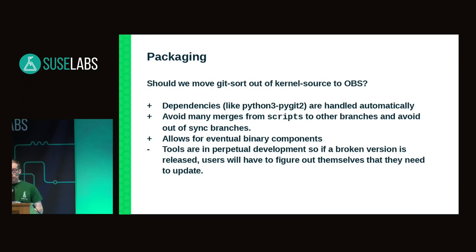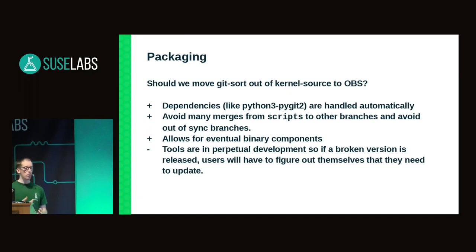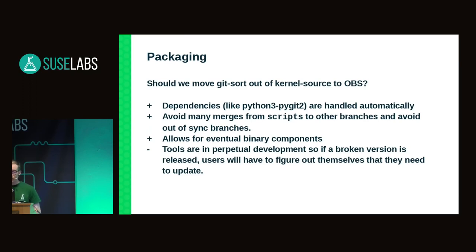This brings me to my first question: should we move the sorting tools outside of kernel-source.git to their own package on OBS? Dependencies would be handled automatically as part of the packaging system. It would avoid the current situation where the scripts are developed in the scripts branch and must be merged to all other active branches. Another advantage is that it would allow for eventual binary components. A slight disadvantage is that if there's a problem, users would have to figure out themselves that they need to update their packages to get the fixed version.